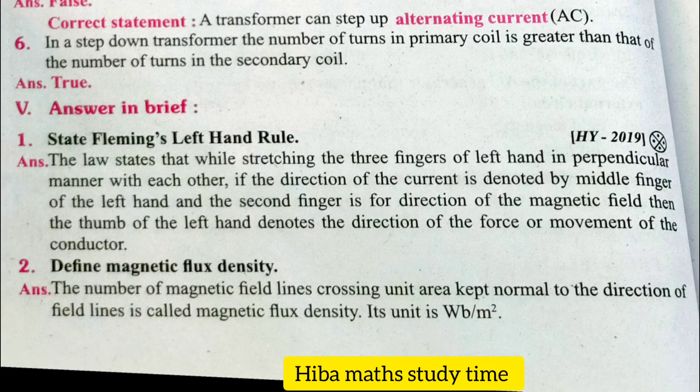Answered in briefly. First question: State Fleming's Left Hand Rule. The law states that while stretching the three fingers of the left hand in a perpendicular manner with each other, if the direction of the current is denoted by the middle finger, and the second finger denotes the direction of the magnetic field, then the thumb of the left hand denotes the direction of the force or movement of the conductor.